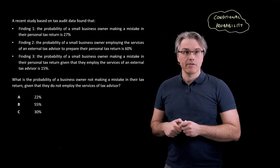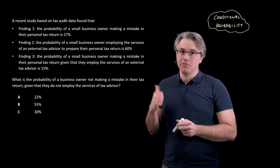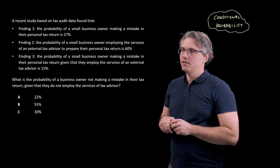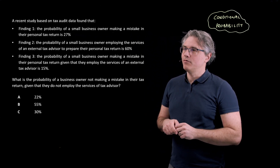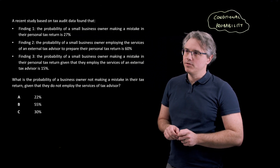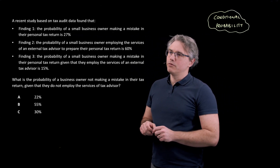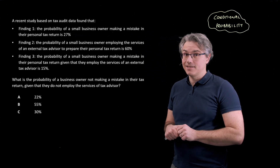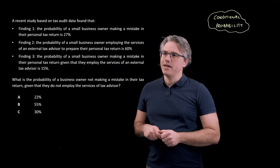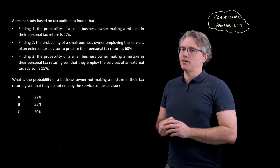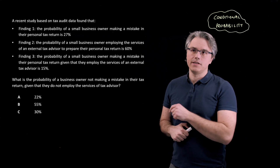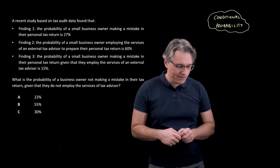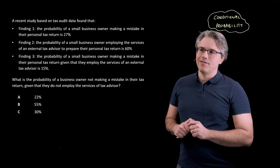So that's the question we're going to have a go at. It's a follow-on question from a previous recording, so you may have already seen it. Let's quickly read through it. A recent study based on tax audit data found that: Finding 1 - the probability of a small business owner making a mistake in their personal tax return is 27%. Finding 2 - the probability of a small business owner employing the services of an external tax advisor to represent them in their personal tax return is 60%. Finding 3 - the probability of a small business owner making a mistake in their personal tax return given that they employ the services of an external tax advisor is 15%. What is the probability of a business owner not making a mistake in their tax return, given that they do not employ the services of a tax advisor?